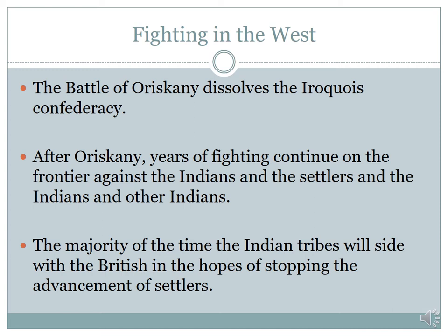The majority of the time, the Indian tribes sided with the British during the American Revolution with the hopes of stopping the advancement of settlers — but not always. Sometimes Indian tribes fought on the side of the Americans, which was one of the things that happened at the Battle of Oriscani, where one side fought alongside the Patriots and the other alongside the British. This is causing divisions a lot more complicated than simply a war between colonists and the British. Always keep in mind the other players in this war: the Native American tribes, and the African American enslaved and free people — all of these different players were also involved in these conflicts.